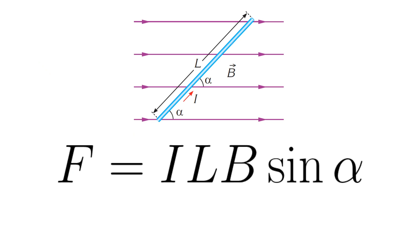Before we start solving problems, it will be useful to recall the topic from the last lesson. We know that if a conductor is in the field of a magnetic field, this wire will exert a force which can be calculated using this equation: current multiplied by the length of the wire, the magnetic field strength, and sine alpha, where alpha is the angle between the wire and the magnetic field lines.